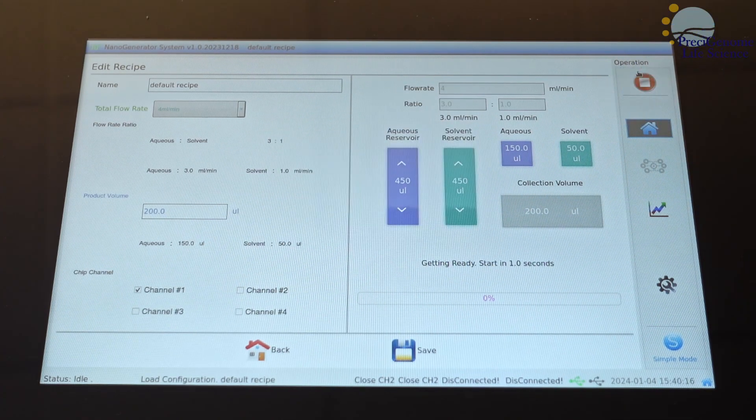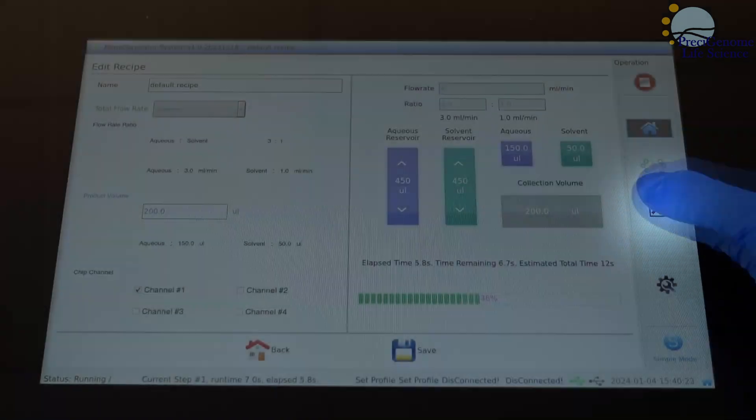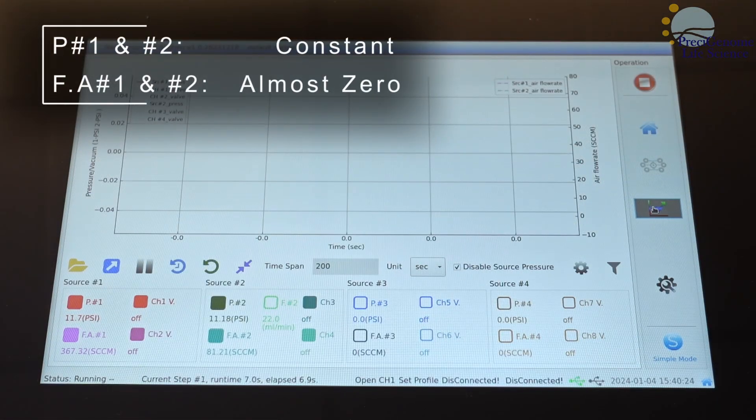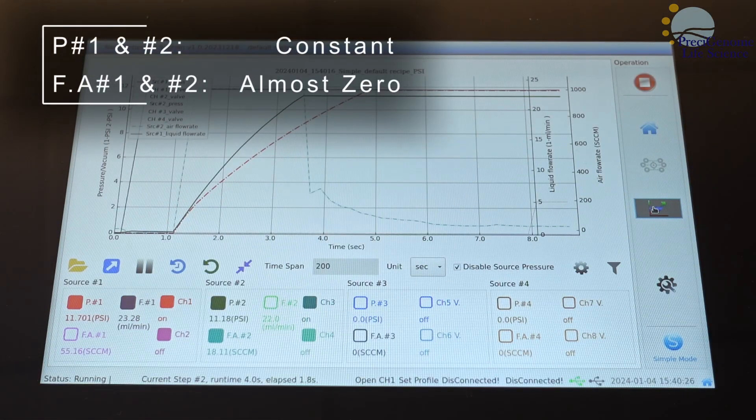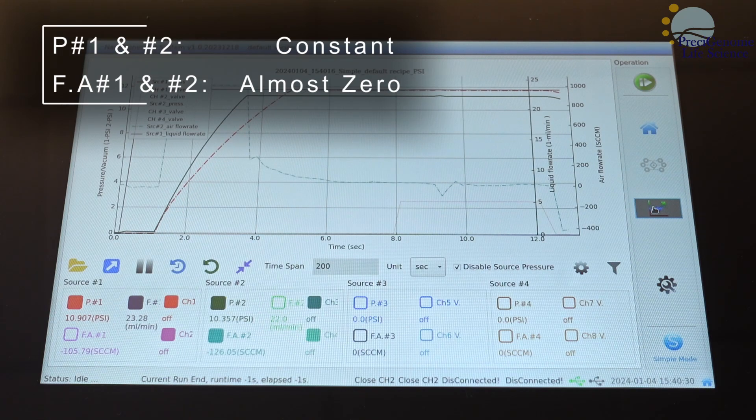In any case, after executing a recipe, you may monitor its line pressure and flow rates here. If your setup proceeded correctly, the pressure should quickly stabilize and the air flow rate should stay near zero. A typical recipe will be completed within seconds.